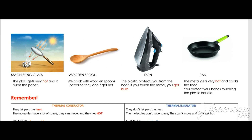Then, we have an iron. This is an iron. The plastic protects you from the heat. If you touch the metal, you can get burnt. But we use the plastic because it's a thermal insulator and the heat doesn't pass through the plastic.